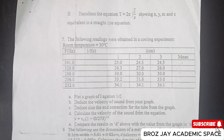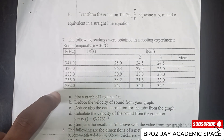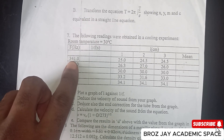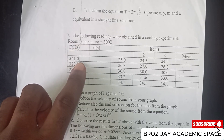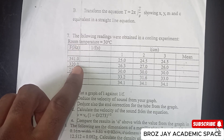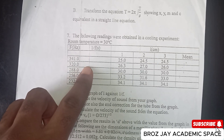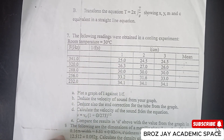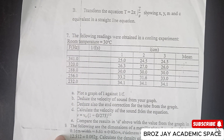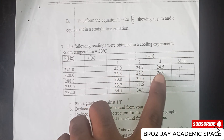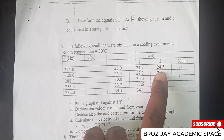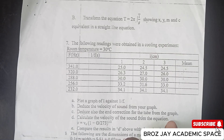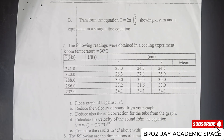Let's dive in. To fill in the table: 1 divided by 341.0 gives 0.0029, which in standard form is 2.9 × 10⁻³. For the mean L: add the values — for example, 5.0 + 24.5 + 24.5 — divide by 3 to get the mean. Apply that process to every row in the table. At the end, your completed results will look like this.